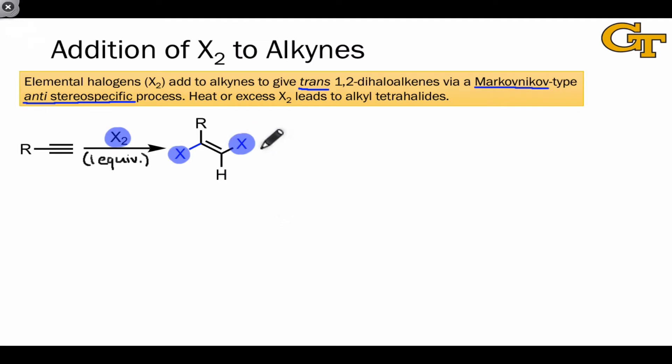However, if we treat the alkyne with an excess of X2, using two equivalents or sometimes even more, a second equivalent of X2 is added to the dihaloalkene intermediate, and we end up with a product that contains four halogen atoms, a tetrahalide.